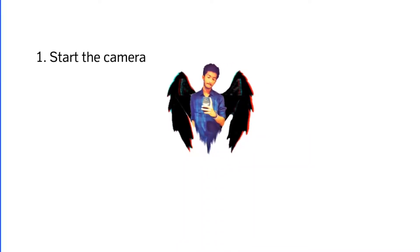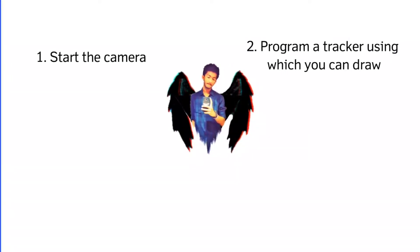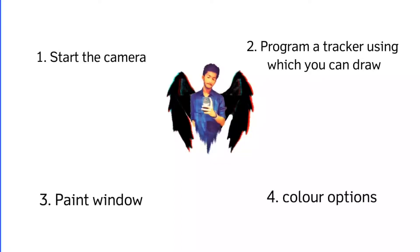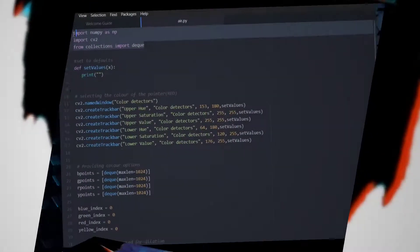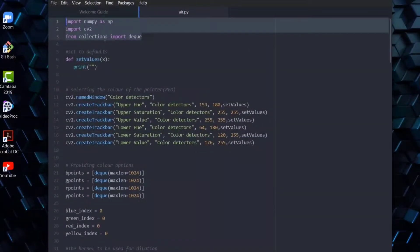Step one would be to start the default camera on your laptop. Step two would be to program a tracker or detector using which you can draw lines. Step three is to create a paint window just like the one I've used in my video. And finally, step four would be to provide color options — there's no fun in playing without colors, right?